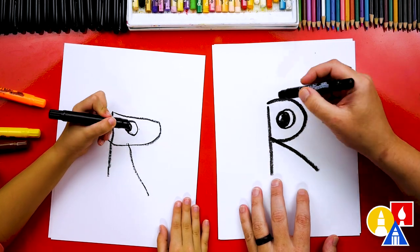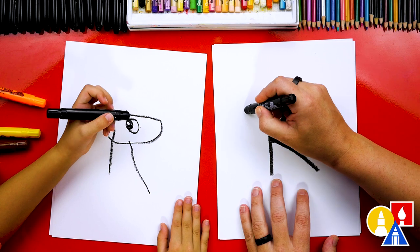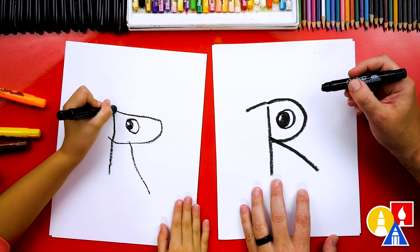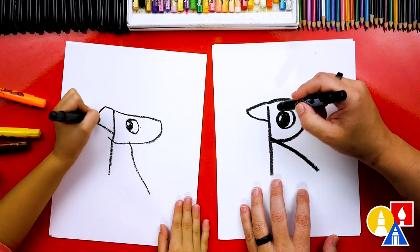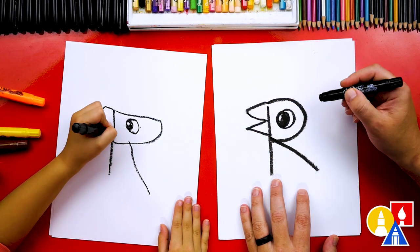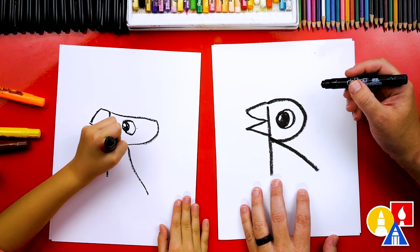Okay. Now let's draw the beak. We're first going to draw a line that comes out from the top. Then we're going to come back in, then back out, and then back in. There's our beak.